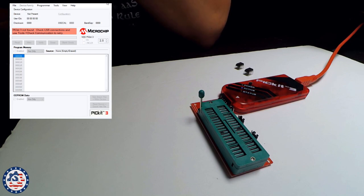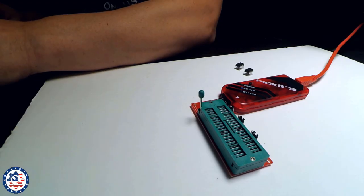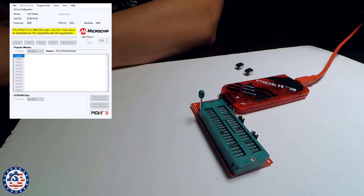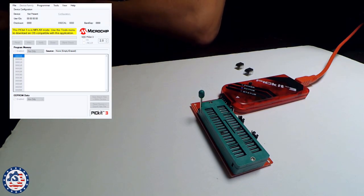And let me close this and power up. So I'm going to start the Pickit 3 app again. It says the Pickit 3 is in MPLAB mode. Use the tools menu to download the OS compatible with this application. And all I need to do is I need to go into tools, download Pickit operating system. So if I do that, I need to show it where the operating system is.